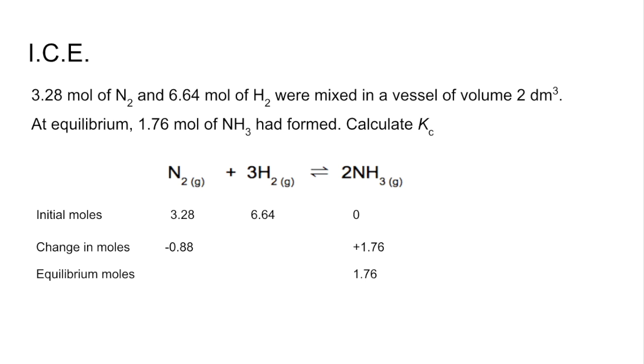And moving on to the hydrogen, you can see a 3 to 2 ratio there. So to produce 1.76 moles of ammonia, we need 1.5, or 3 over 2 times that of hydrogen, and that comes out at 2.64. So hydrogen's moles will drop by 2.64. So now we know the change, we can work out the differences, and that's going to give us the equilibrium moles. So it's 2.40 for nitrogen, and 4 for hydrogen.